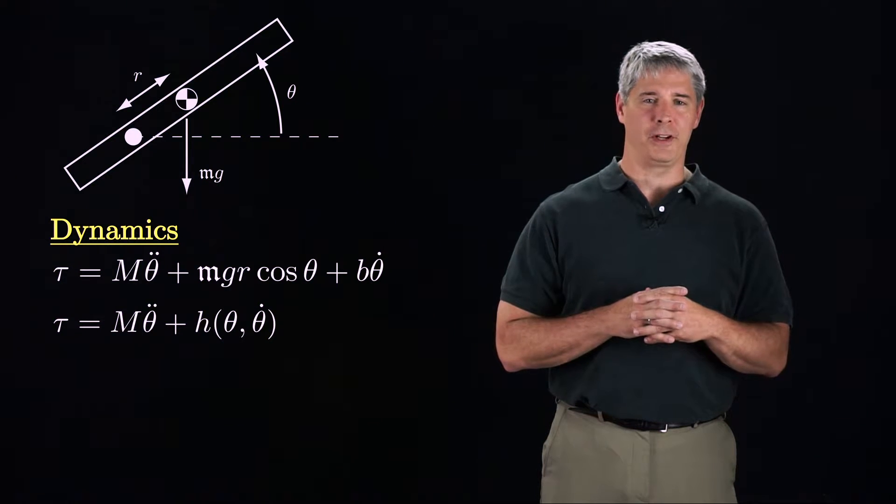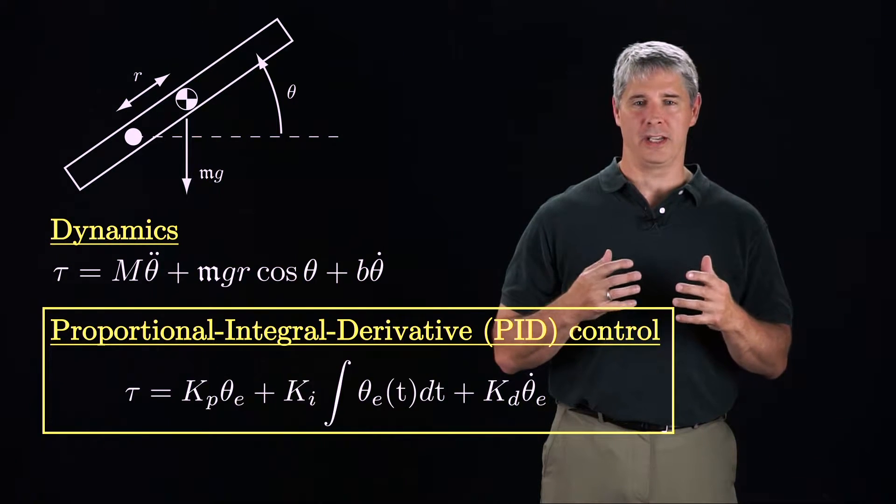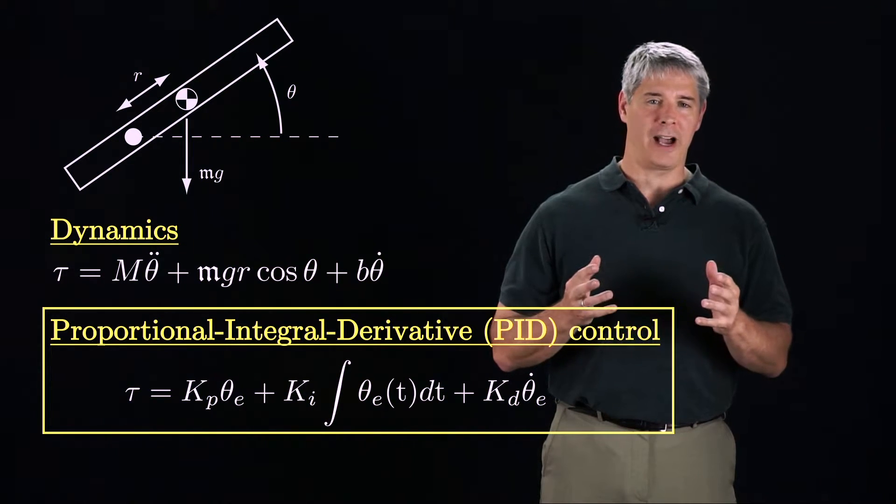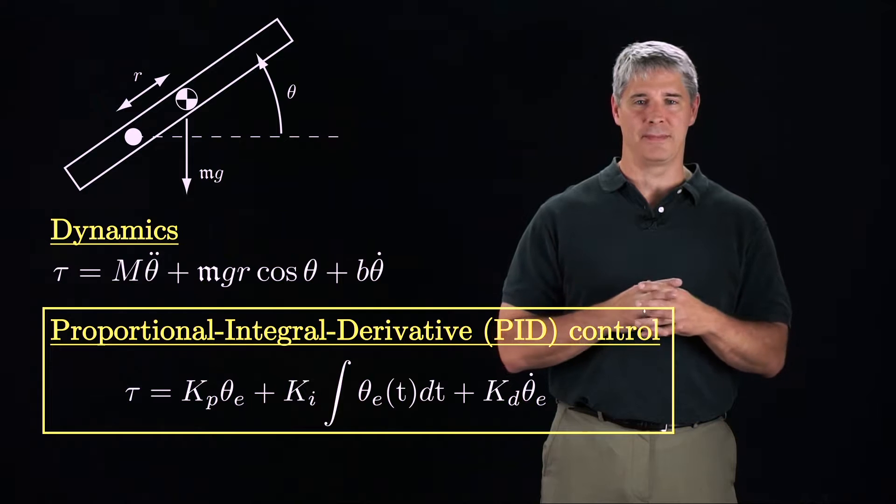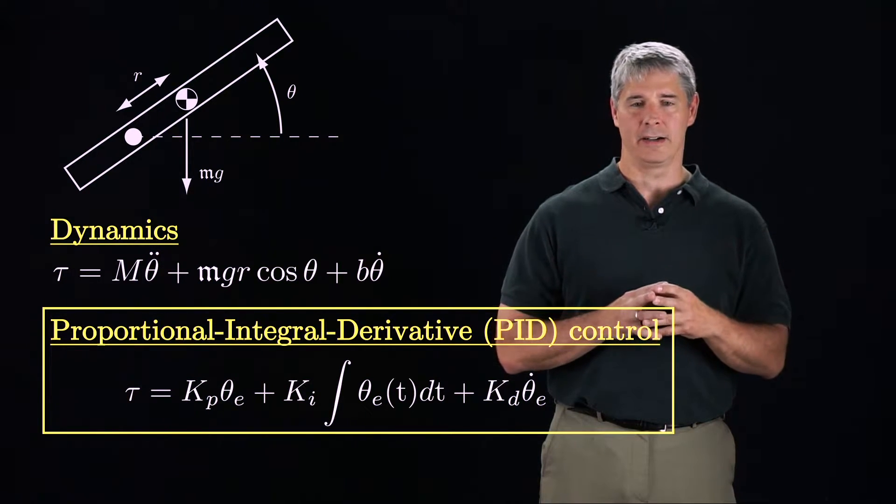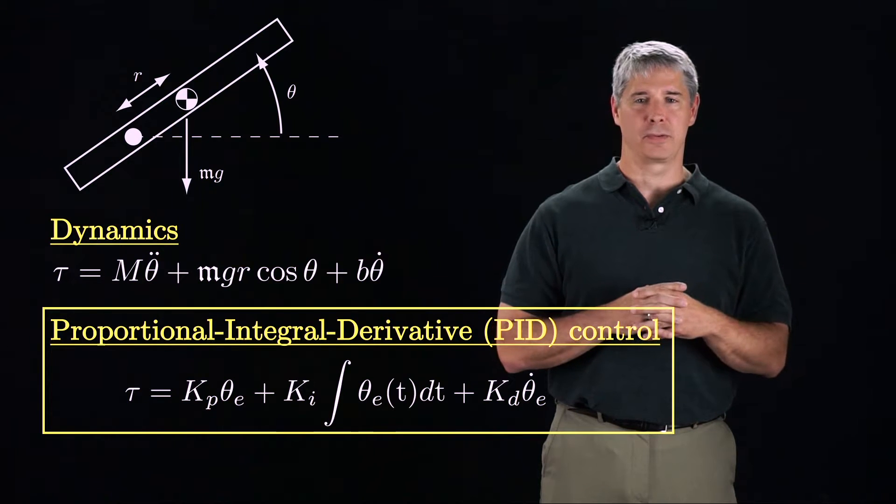Perhaps the most widely used feedback control law is proportional integral derivative control, also known as PID control. The controller output tau is kp times the joint position error, plus ki times the integral of the error, plus kd times the derivative of the error.